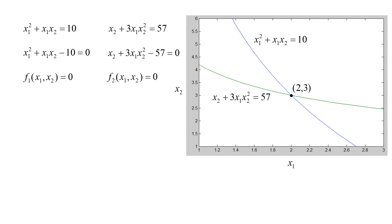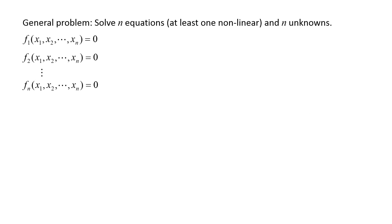The intersection point is where x1 is equal to 2 and x2 is equal to 3. A graphical method may be possible with two nonlinear equations, but it is too difficult to use this method if there are three or more nonlinear equations. More generally, we will have n equations and n unknowns. If just one of these equations is nonlinear, the entire set of equations is nonlinear.